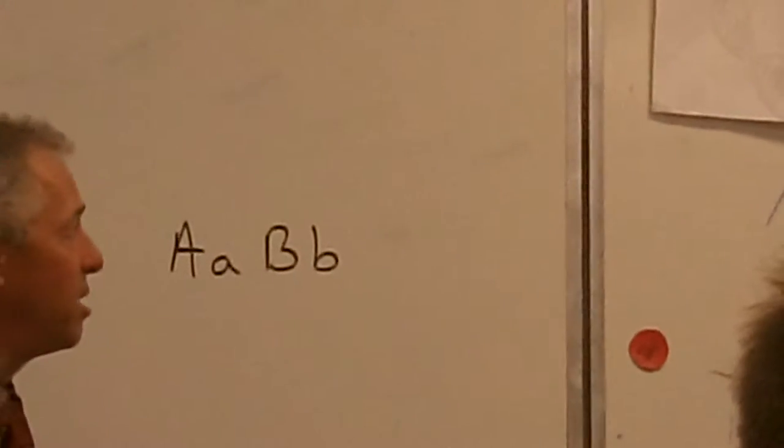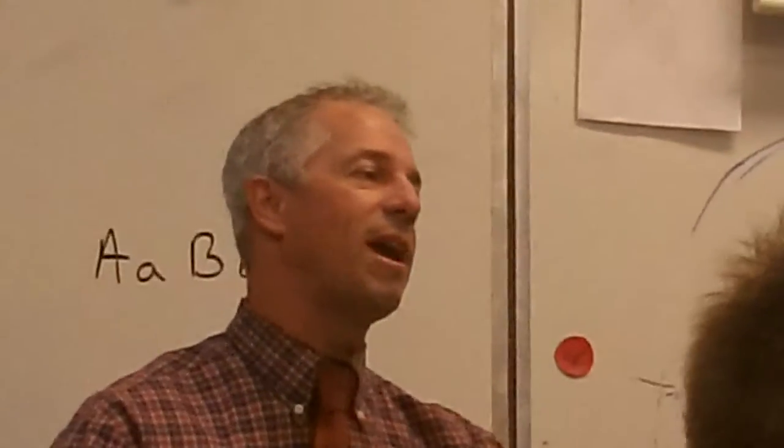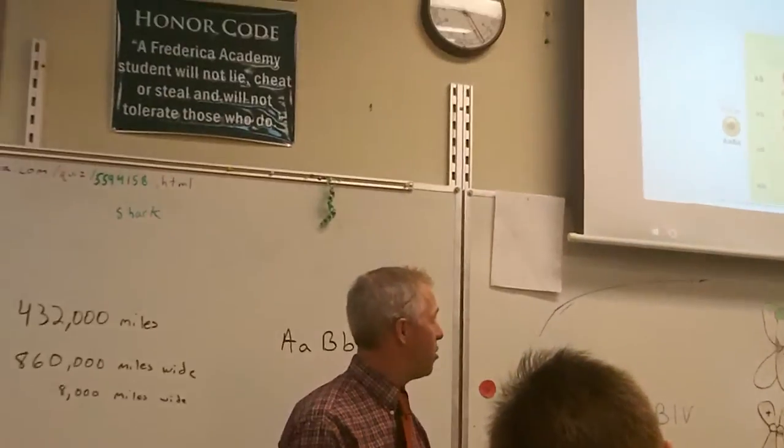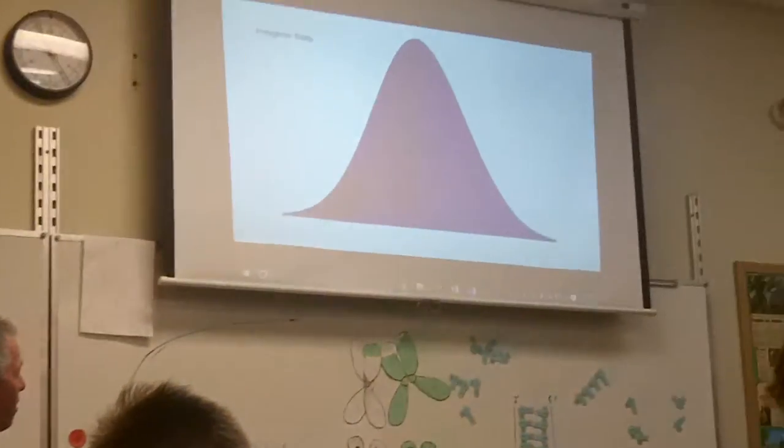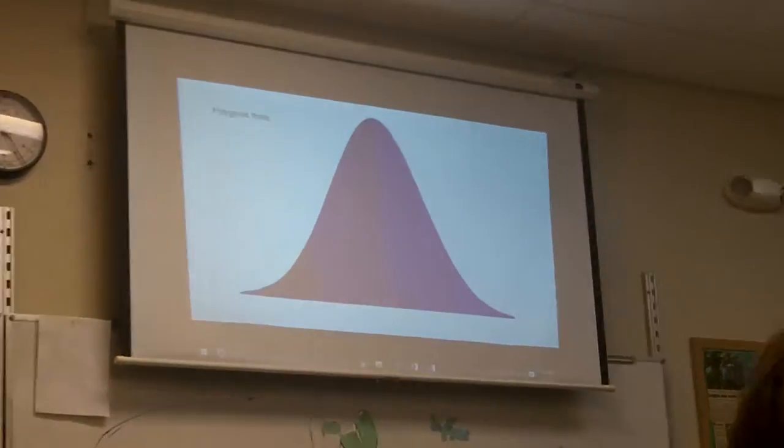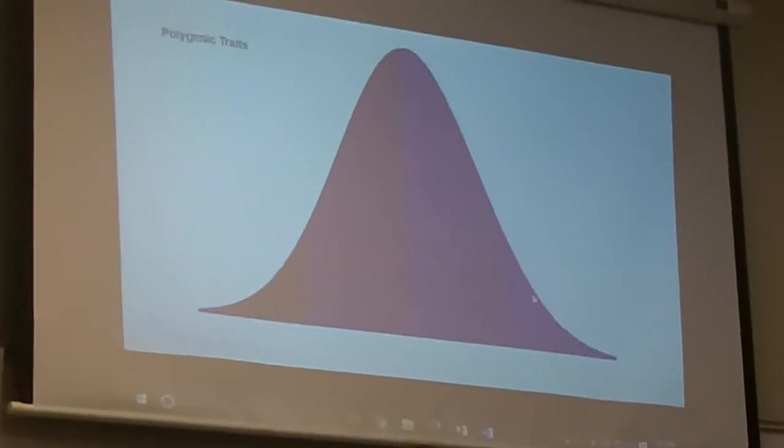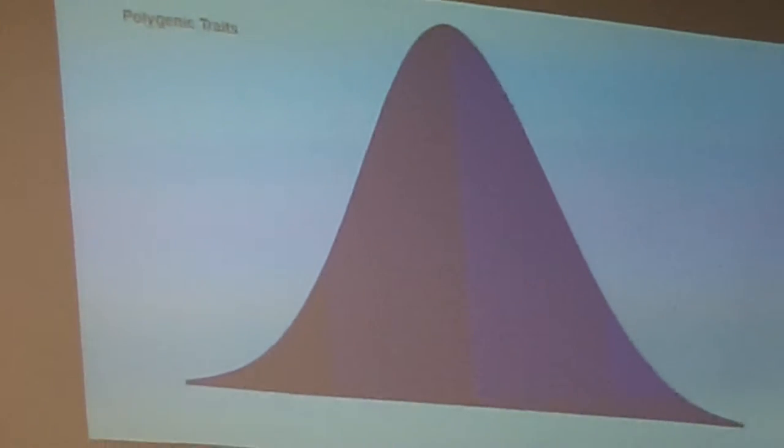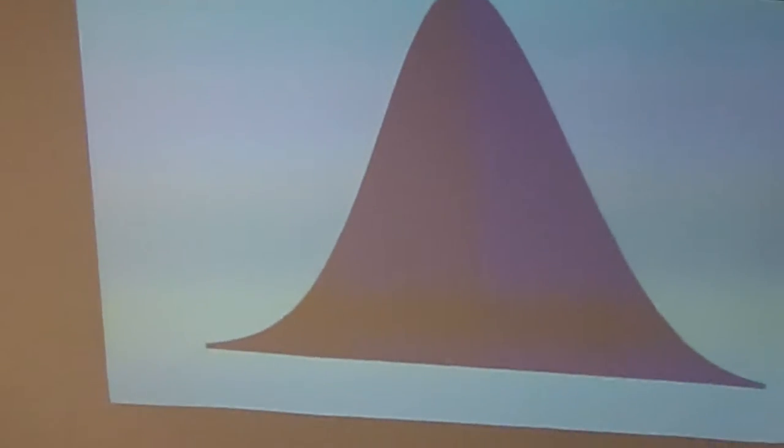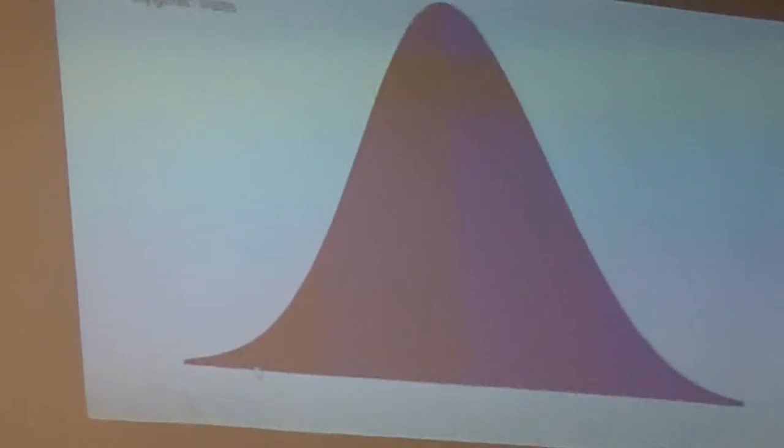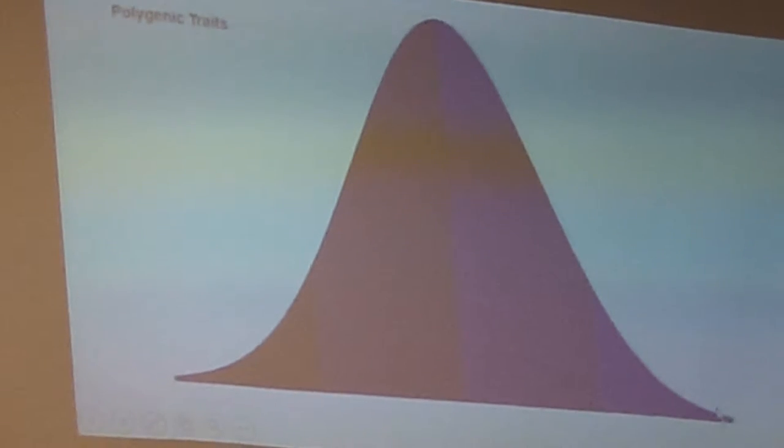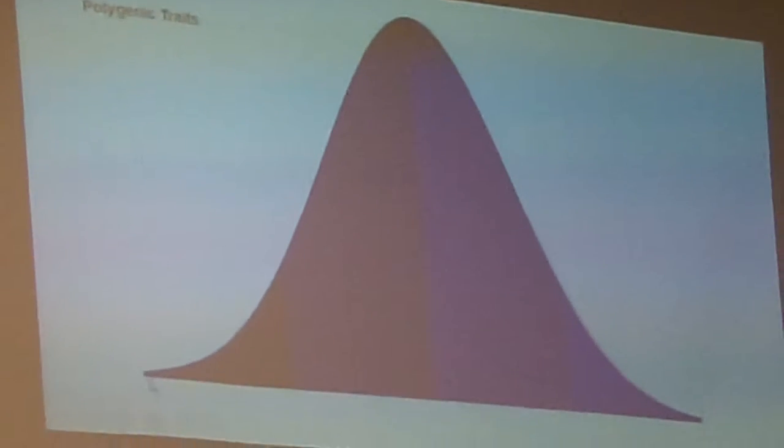And it gives you a bell curve, usually. If you ever see a bell curve of variations of people, then that's a polygenic trait, like intelligence. Intelligence is on a bell curve because there's so many different genes. You have very few people who are really, really smart, and very few people who are really deficient, and most people are in the middle somewhere.